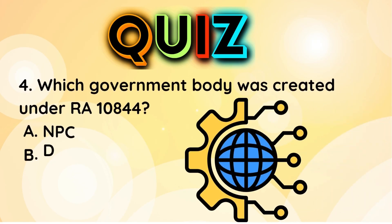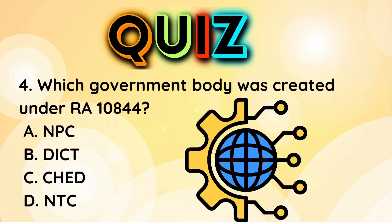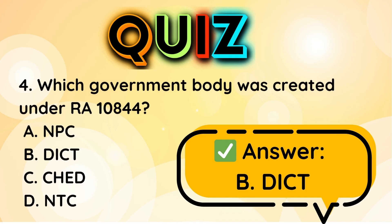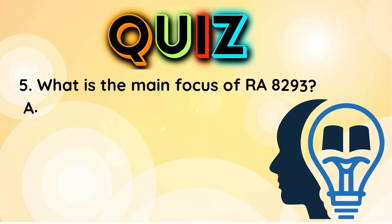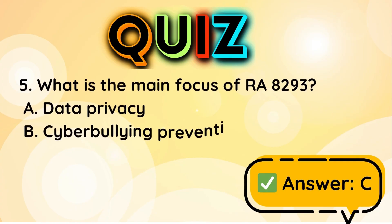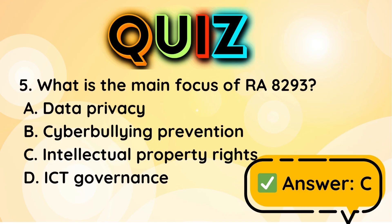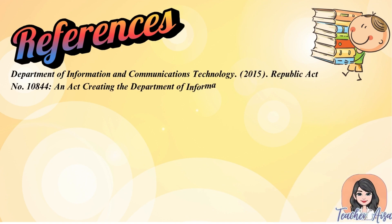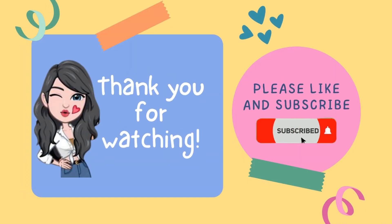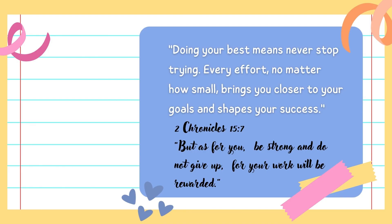Four: which government body was created under RA 10844? Excellent — it is the DICT. Five: what is the main focus of RA 8293? Correct — it is letter C, intellectual property rights. We'll see you next time.